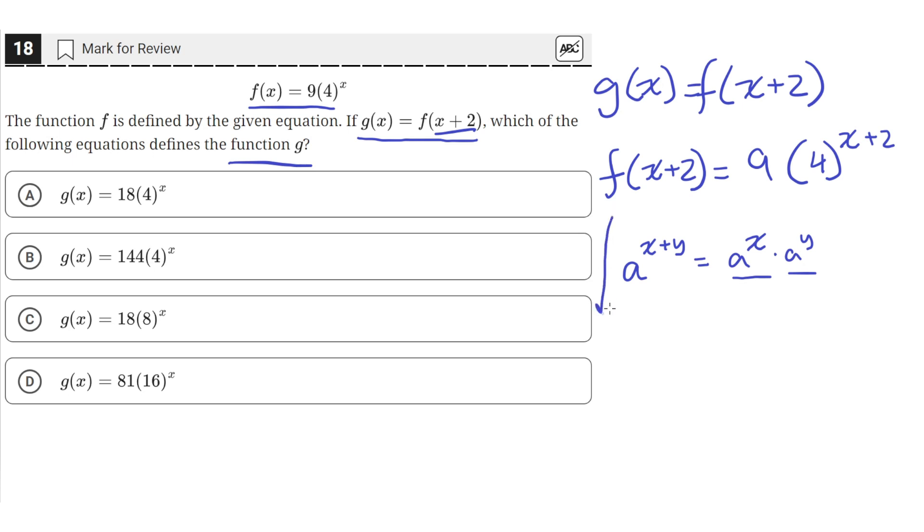So we can use that property of exponents to simplify this down. We'll just split the 9 times 4 into two different terms: 4 raised to the x times 4 raised to the 2. But it would still be multiplying with 9 since we're raising the 4 to this power, not the 9.